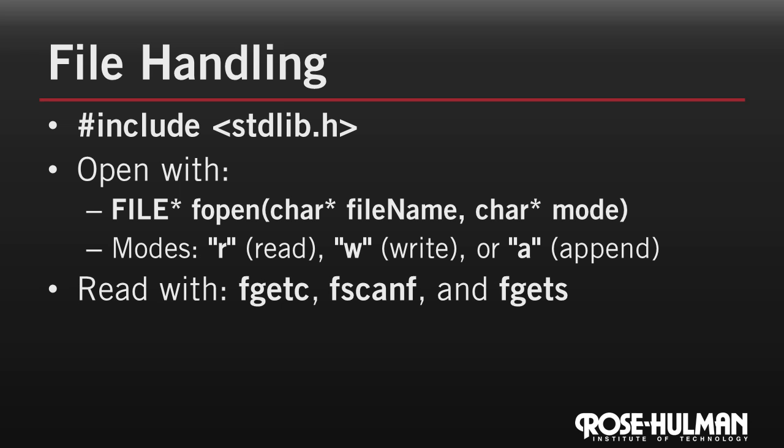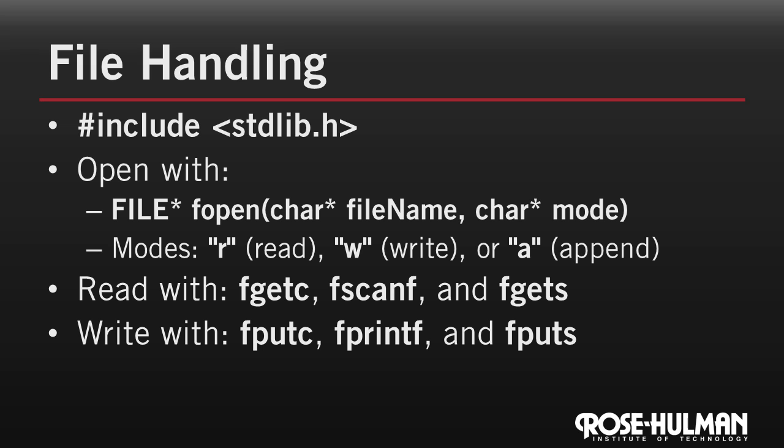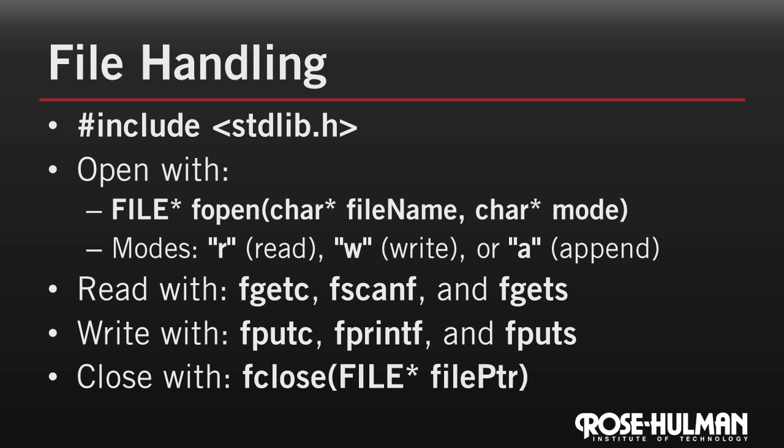C provides several functions for reading from files and writing to them. We'll look at the details of that shortly. Finally, you close a file in C using the fclose function, passing it the pointer that you got from fopen.